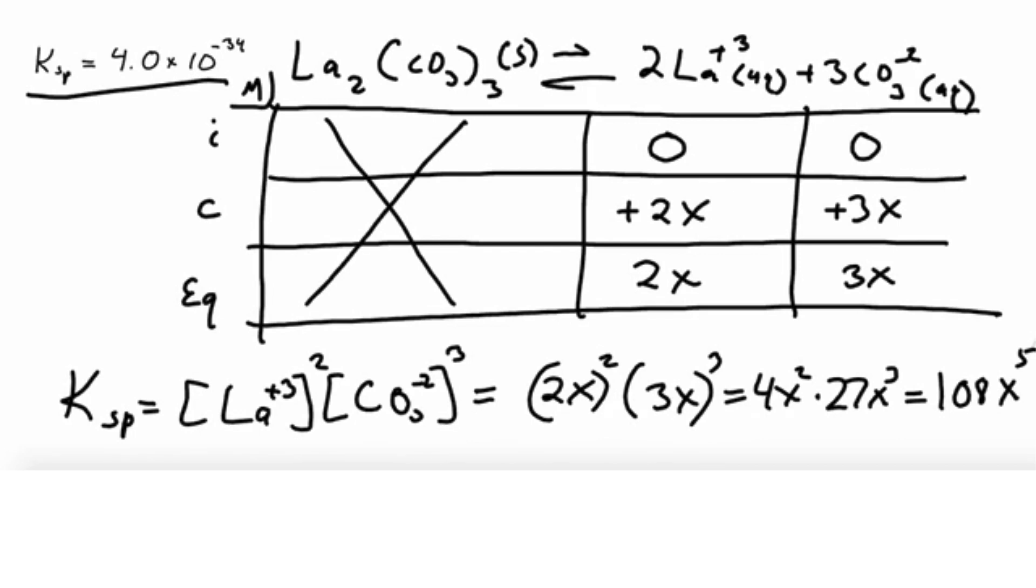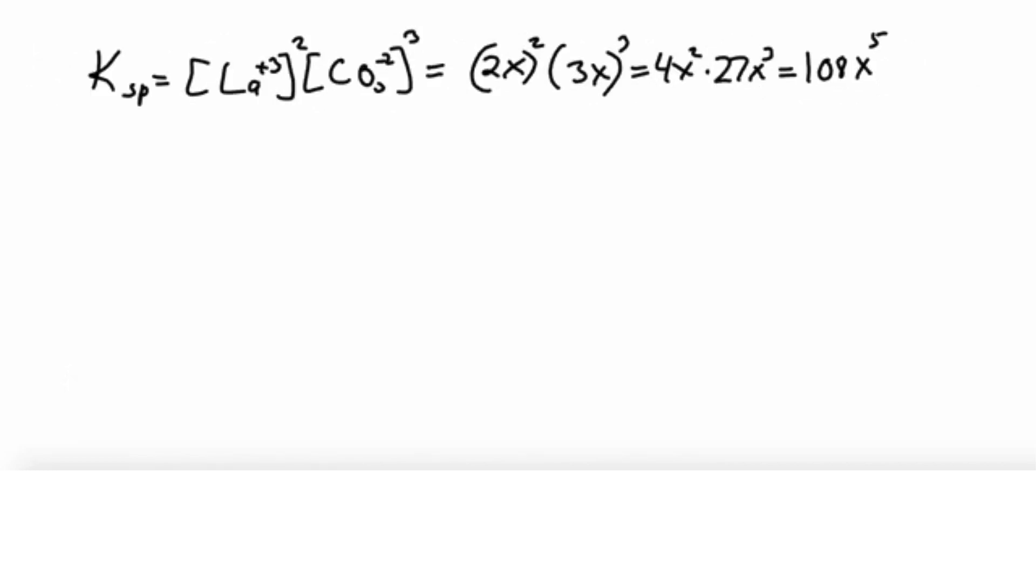And now we can just take that expression and get our final answer. So let's solve for x. We divide by 108. So we've got Ksp divided by 108 is equal to x to the 5th. So let me just take the 5th root of both sides. x is equal to the 5th root of Ksp over 108.